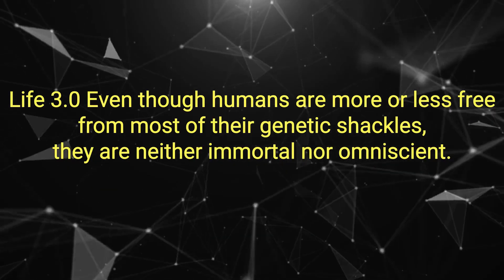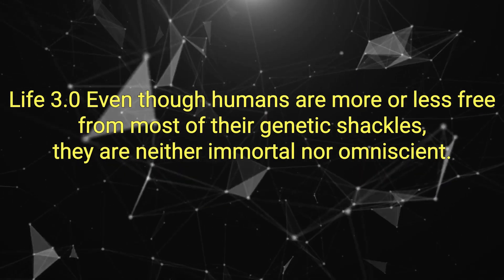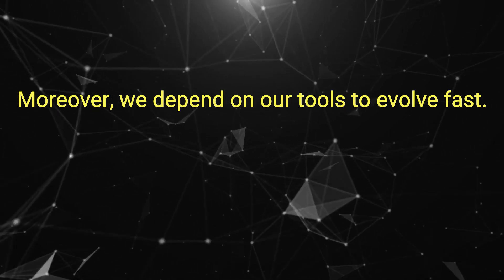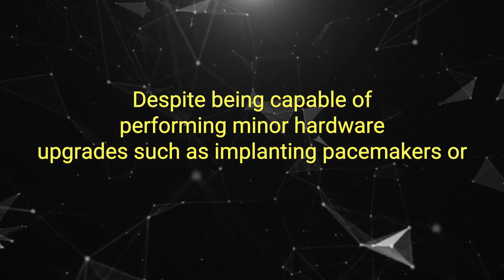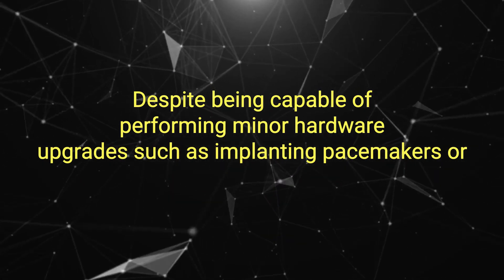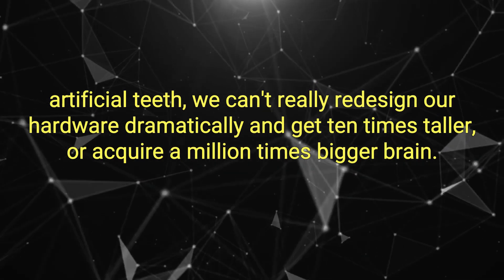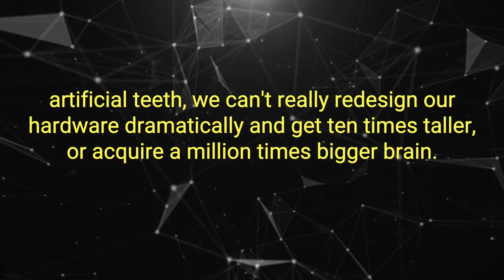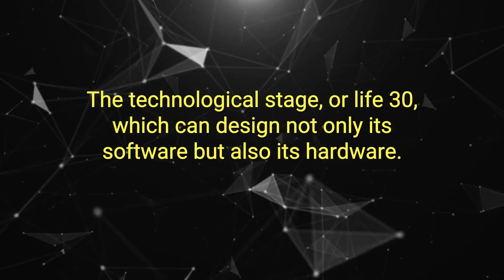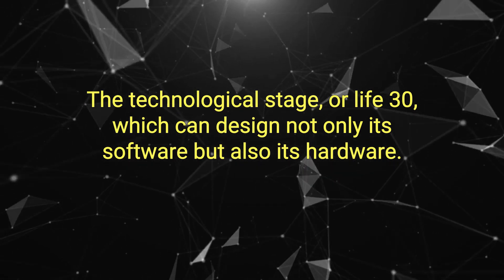Life 3.0: Even though humans are more or less free from most of their genetic shackles, they are neither immortal nor omniscient. Moreover, we depend on our tools to evolve fast. Despite being capable of performing minor hardware upgrades such as implanting pacemakers or artificial teeth, we can't really redesign our hardware dramatically and get 10 times taller or acquire a million times bigger brain. That would be the next step in evolution: the technological stage, or Life 3.0, which can design not only its software but also its hardware.